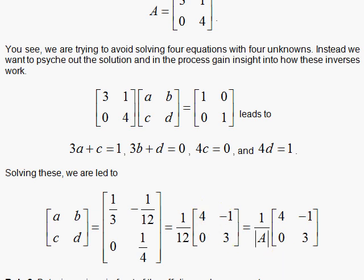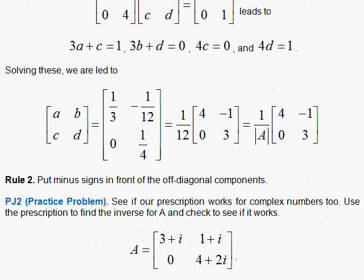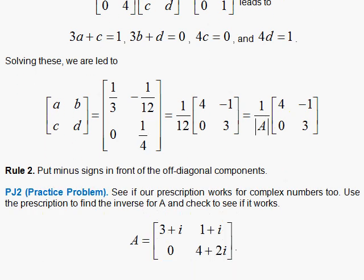I notice I have my determinant out here again. And it looks like I have another rule. Rule 2 is put minus signs in front of the off diagonal components. Now, I didn't really do it for this one. But my guess is if it happened up here, it probably happens down here. And this may be a general rule. So for your practice problem here, try this with the complex numbers in three places and see if it works.